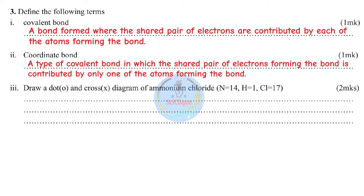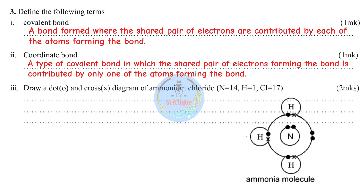We'll draw a dot and cross diagram of ammonium chloride, starting with ammonia's structure, then the ammonium ion, then ammonium chloride. Ammonia consists of one nitrogen atom and three hydrogen atoms. Nitrogen has the electron configuration 2,5 — five valence electrons — so it needs three more electrons for a stable octet. Hydrogen has one valence electron and needs one more to become stable, as the first energy level holds a maximum of two electrons.